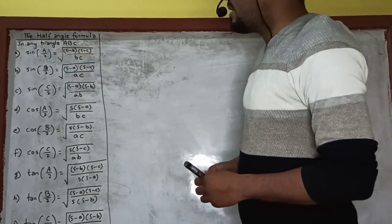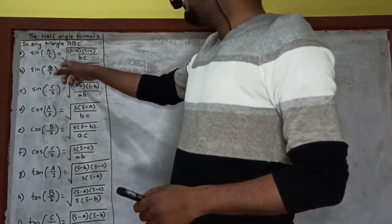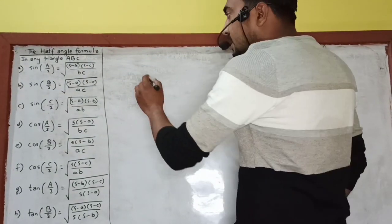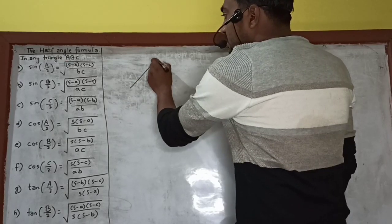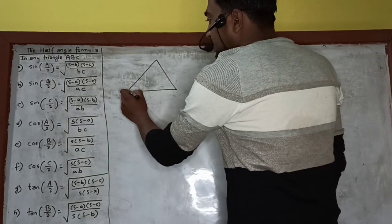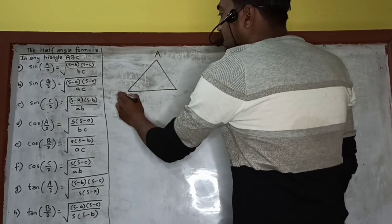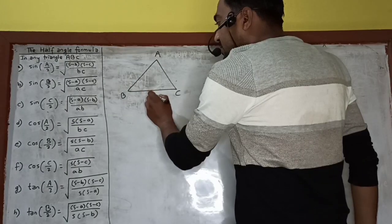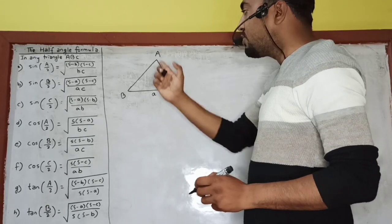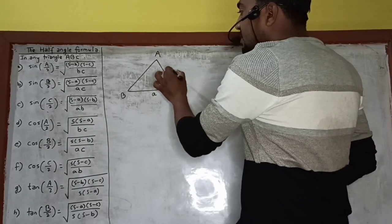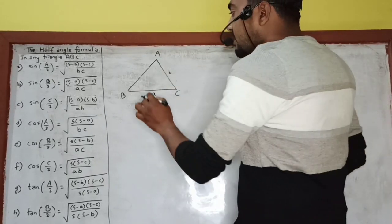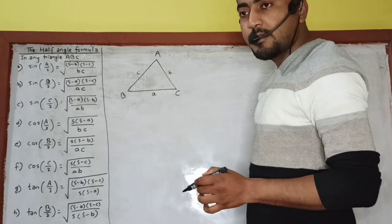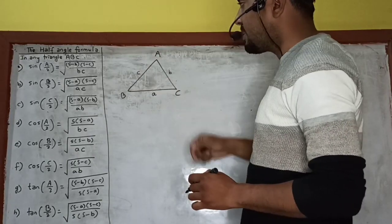So in any triangle ABC, sine A upon 2 is equal to under root (S minus B)(S minus C) upon BC, where the symbols have their usual meaning. If you have any triangle ABC whose angles are capital A, capital B and capital C, then small a represents the length of side BC opposite to vertex A, small b represents the length of side AC opposite to vertex B, and small c represents the length of side AB opposite to vertex C.